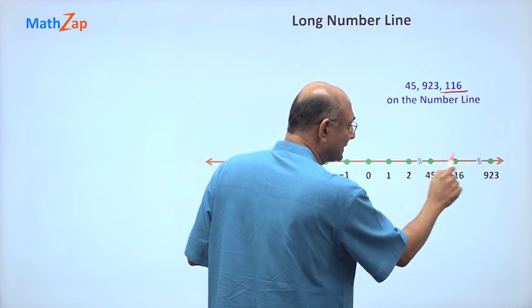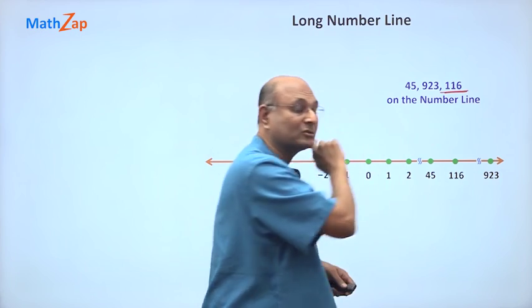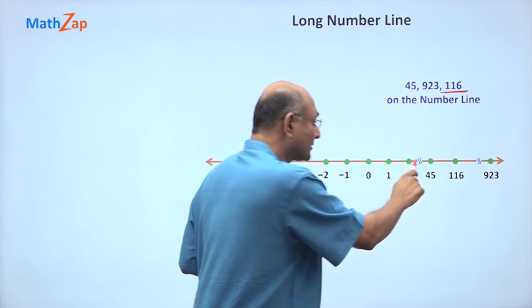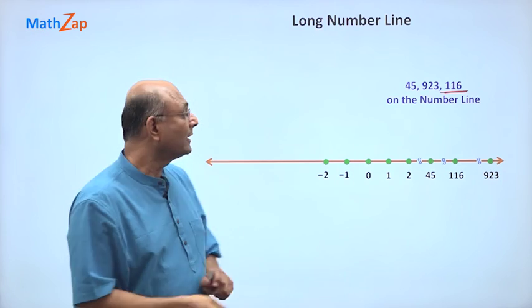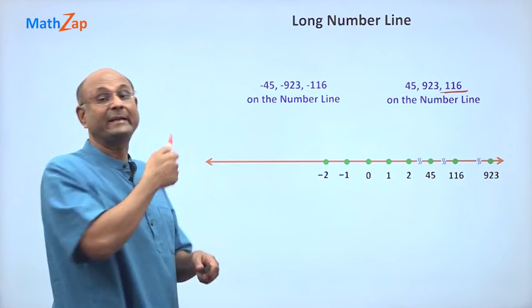Already on that side I have put a break, but here also I need a break. Between 45 and 116, now it looks like there is a gap of one, but actually you know that there are lots of gaps. So we put a break there. Let us now look at a few examples on the negative side.